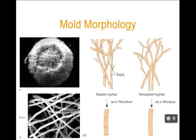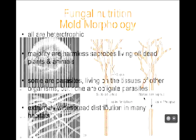Some fungi, as they grow, build little cross walls in their hyphae called septa. These organisms make septate hyphae. Other organisms don't put septa into their hyphae — these are non-septate. This is just a way of identifying a fungus, like noting whether a fungus has septate or non-septate hyphae, helping you to identify it based on whether it has those little cross walls periodically in its hyphae.